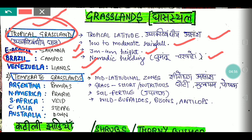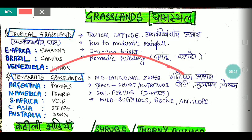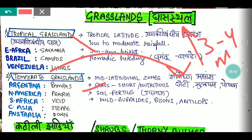Tropical grasslands are also known as Llanos and Savanna. Moving to middle latitudes, we have temperate grasslands. In temperate grasslands, the grass is short compared to tropical grasslands.